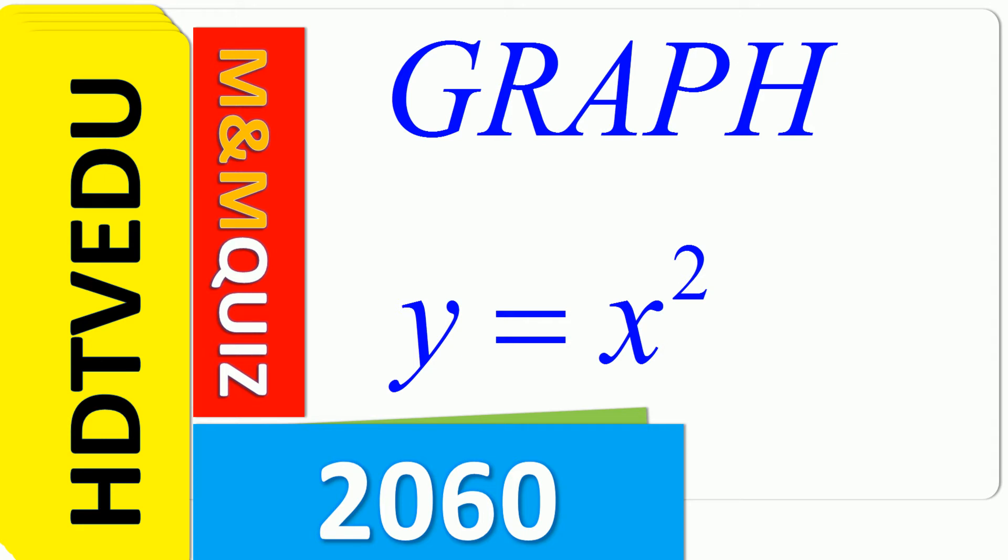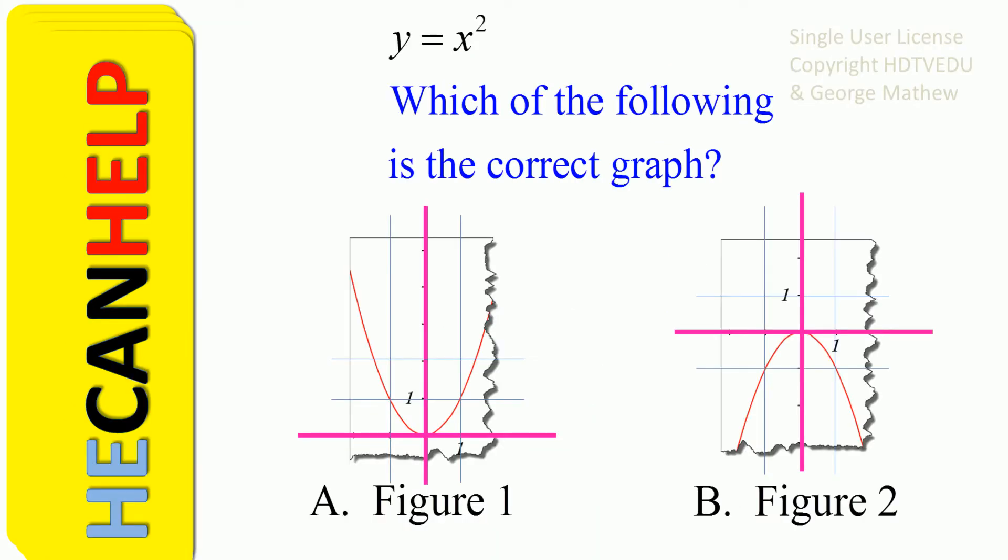Graph, y is equal to x to the power of 2. M&M quiz 2060. Y is equal to x squared. We are given that y is equal to x squared. Which of the following is the correct graph?